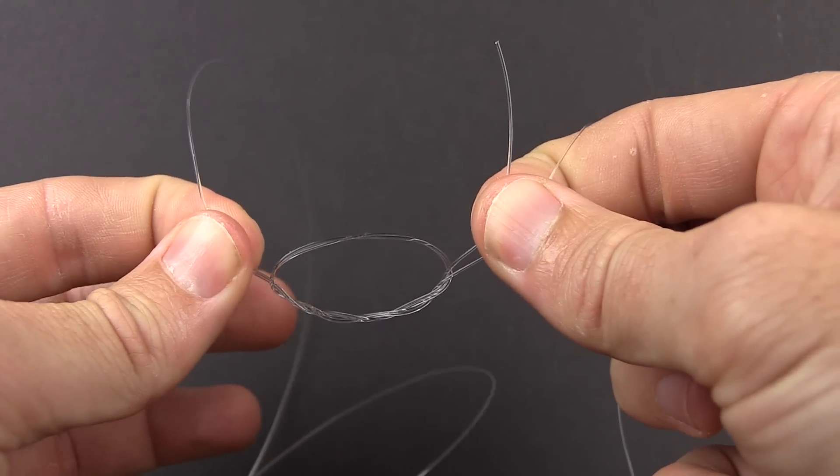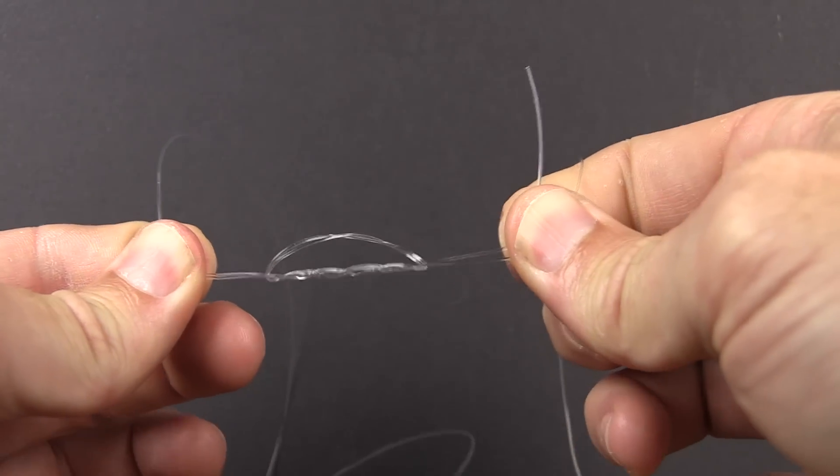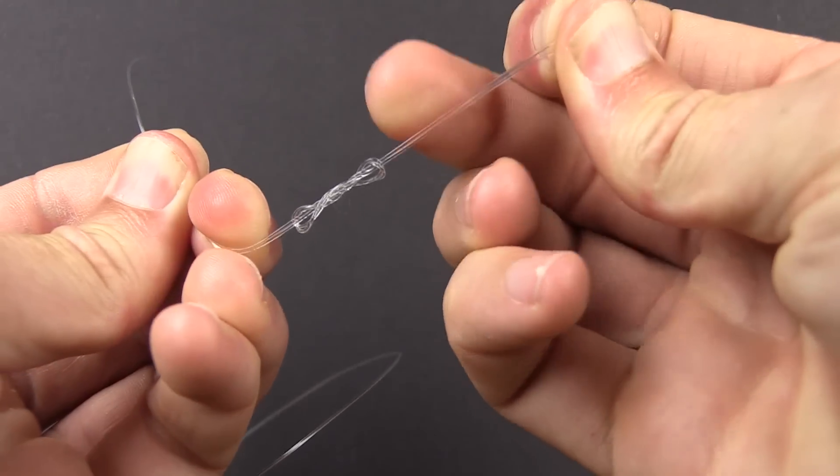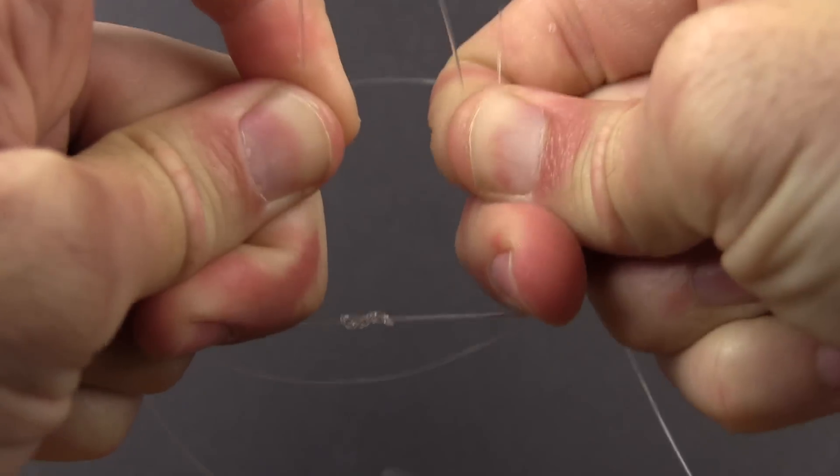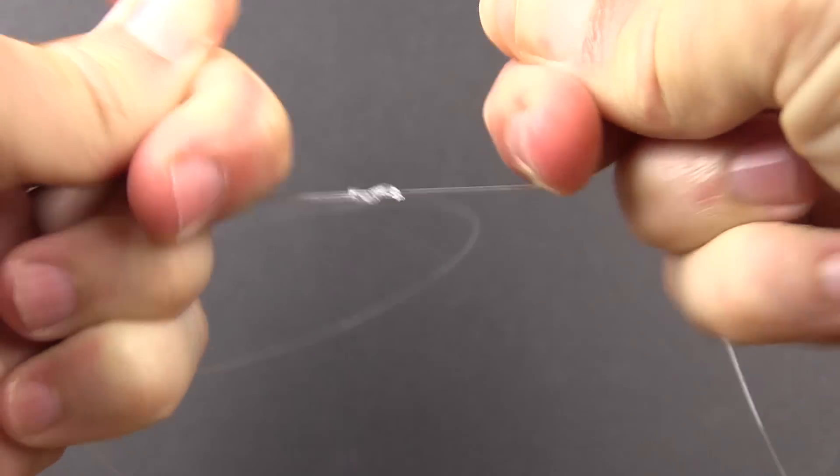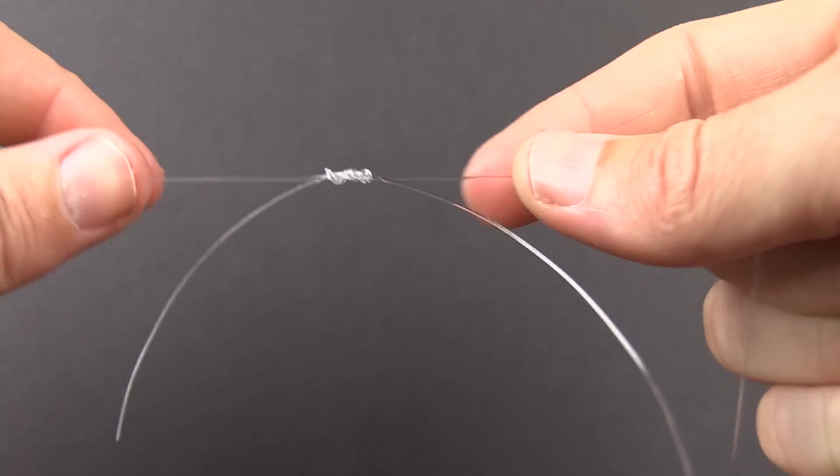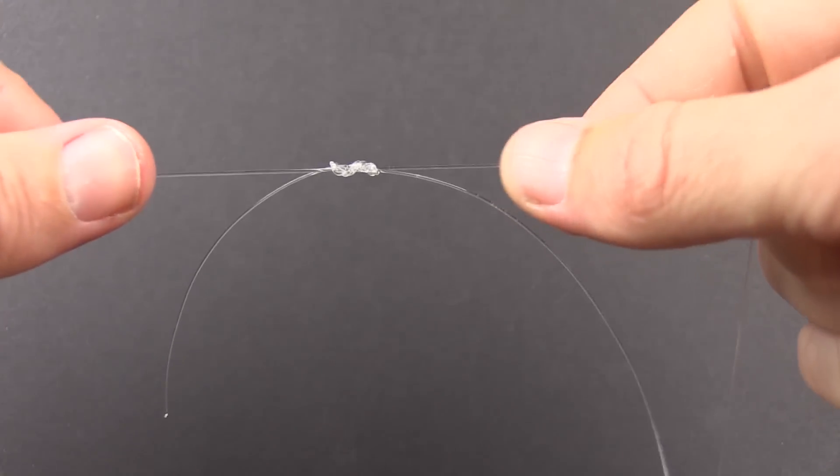What will happen is there'll be a nice looking figure eight that will condense even further. Just pull it with as much tension as you can. After you've tightened with all four strands, you just drop the tags, hold on to the main line and the leader, and pull to cinch it down.